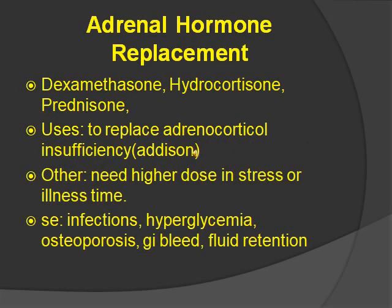Adrenal hormone replacement is anti-inflammatory and suppresses the immune response. Medications include dexamethasone, hydrocortisone, and prednisone — all end in '-one' because they're steroids. Uses include replacing adrenocorticoid insufficiency, such as Addison's disease. You need a higher dose in times of stress or illness. Side effects are infections, hyperglycemia, osteoporosis, GI bleed, and fluid retention.